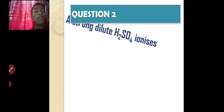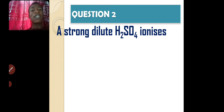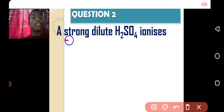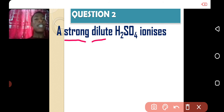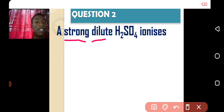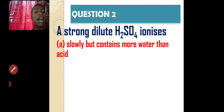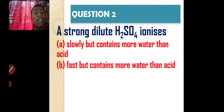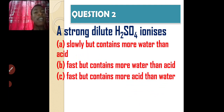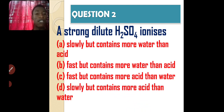Question two: a strong and dilute H₂SO₄ — note again those two different parameters. How does it ionize? Is it slowly but contains more water than acid? Fast but has more water than acid? Fast but contains more acid than water? Or slowly but contains more acid than water? Let us know your answer in the comment section below.